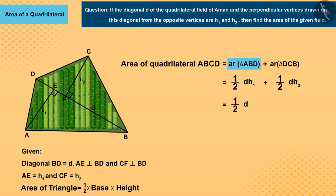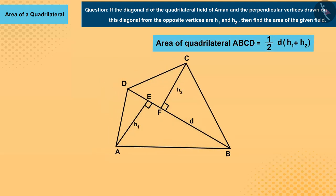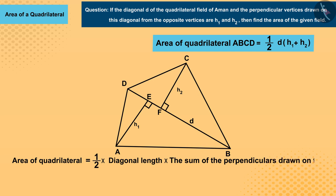Now using the area of triangles ABD and DCB, we can say that the area of a normal quadrilateral is equal to one-half times the length of the diagonal of the quadrilateral times the sum of the perpendiculars drawn on this diagonal from the opposite vertices.